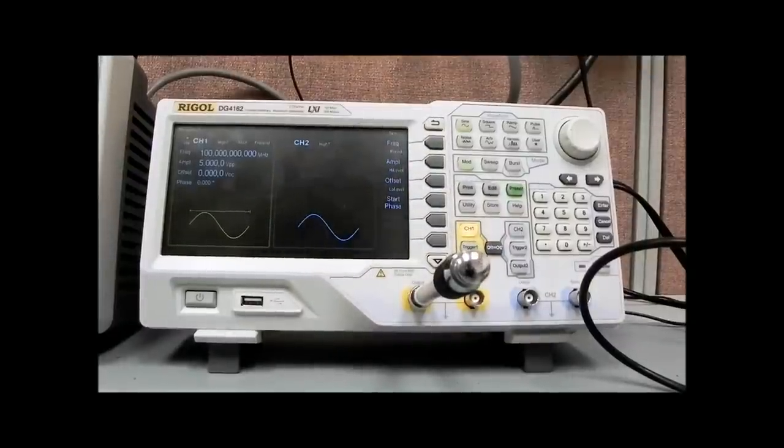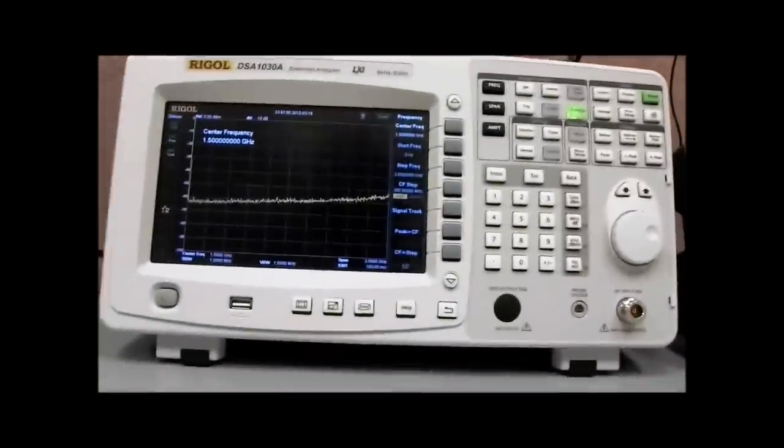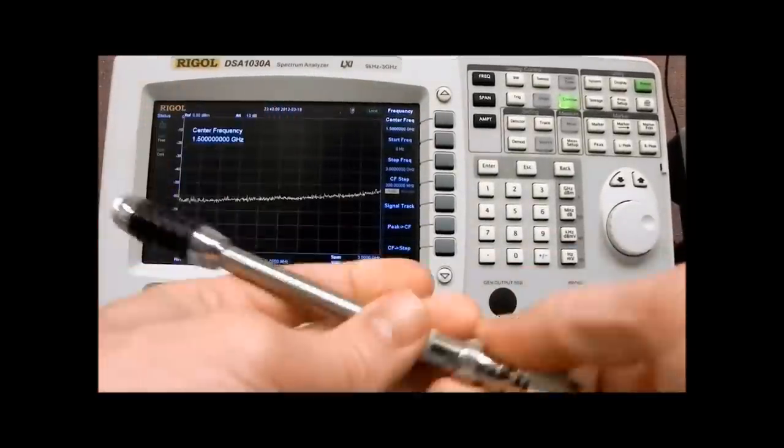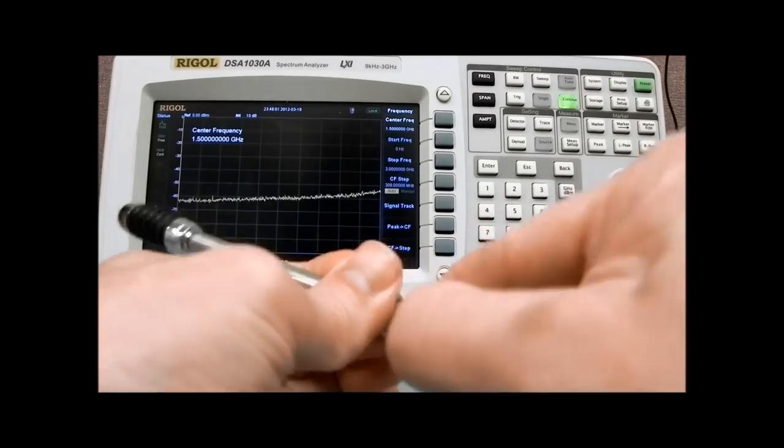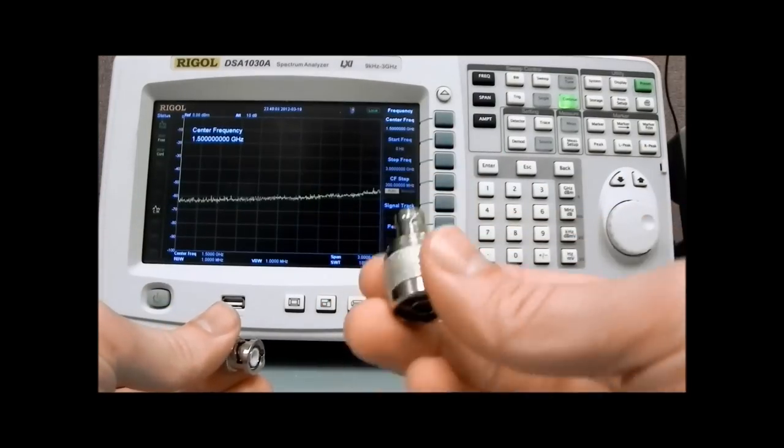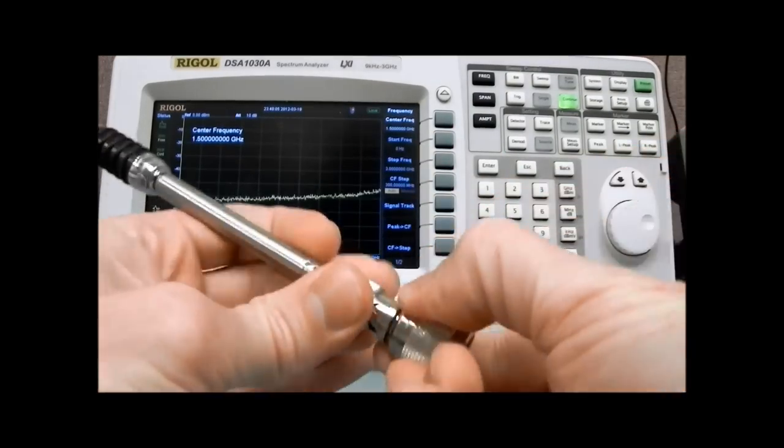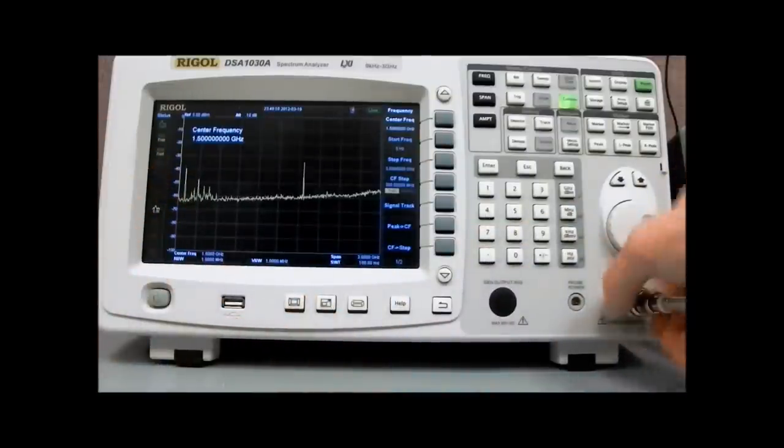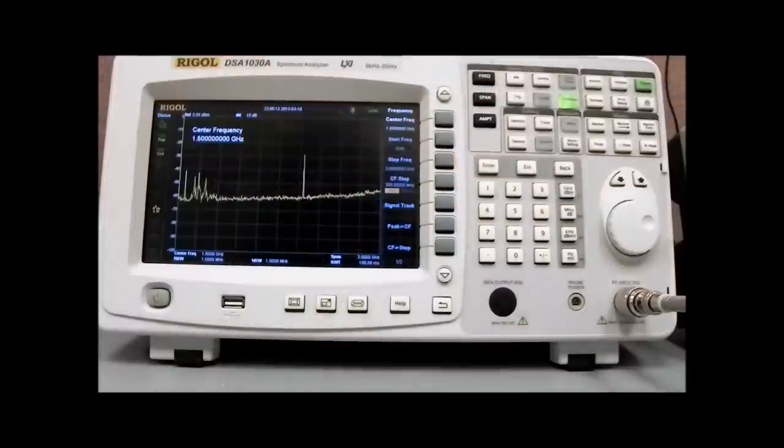And now I'm going to go over to the spectrum analyzer. And with the spectrum analyzer, again, I have the same type of antenna connected to an adapter. This is an N-type to a BNC adapter. Attach that to the RF input, and you'll see we have quite a bit going on. We're picking up lots of radio stations here.